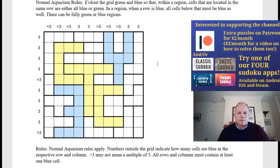Now let's check the rules. Normal aquarium rules are these: colour the grid green and blue so that within a region, cells in the same row are either all blue or green. In a region when a row is blue, all cells below that must be blue as well. But there can be fully green or blue regions. For this puzzle, numbers outside the grid indicate how many cells are blue in the respective row or column. Greater than three may not mean a multiple of three in this case. And also all rows and columns must contain at least one blue cell.